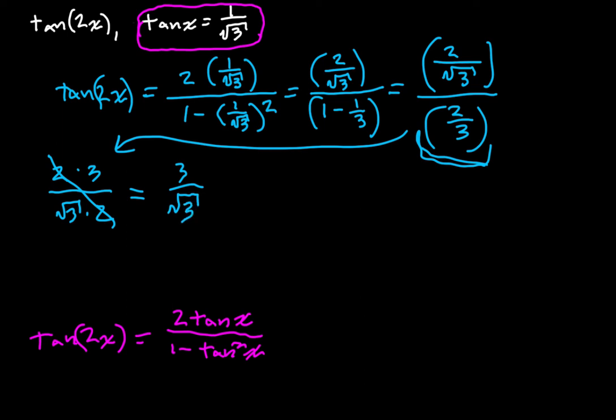We're going to get three over the square root of three. Three divided by the square root of three, something divided by the square root of itself, right? What does square root of three multiply by to get to three? Well, it multiplies by the square root of three. So this is going to be equal to square root of three.